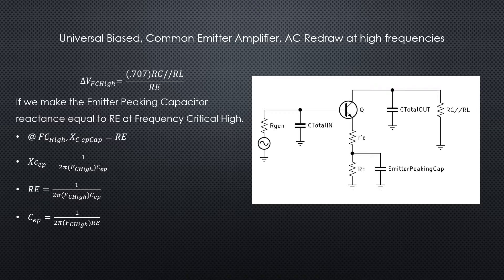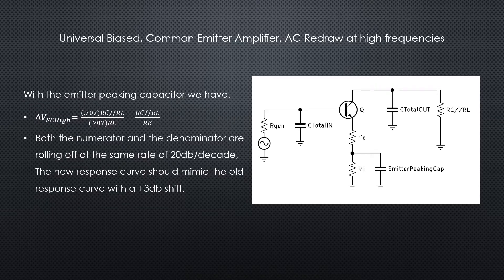And so here I've got the formulas to calculate out what that capacitance would be. Now with the emitter peaking capacitor calculated for and put into the circuit, we know that at fc high it'll look like this formula.